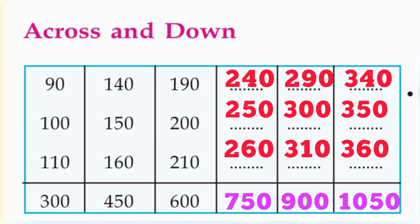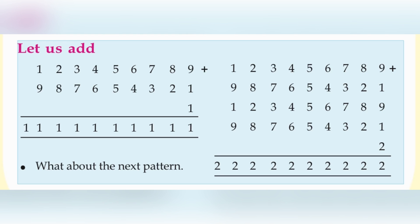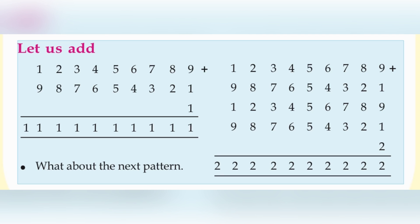There is another activity for you: let us add. Here the numbers 1, 2, 3, 4, 5, 6, 7, 8, 9 are written in ascending order, and below that in descending order, with a 1 added. Let's check: 9 plus 1 is 10, 10 plus 1 is 11 — write 1 and carry 1. Then 1 plus 8 is 9, 9 plus 2 is 11 — again write 1 and carry 1. Continuing: 1 plus 7 is 8, 8 plus 3 is 11; 1 plus 6 is 7, 7 plus 4 is 11; 1 plus 5 is 6, 6 plus 5 is 11.